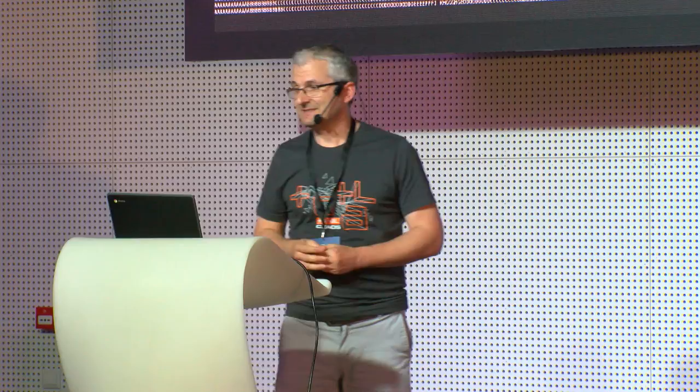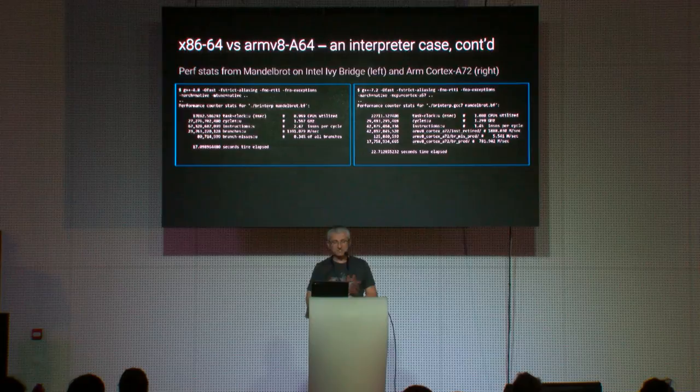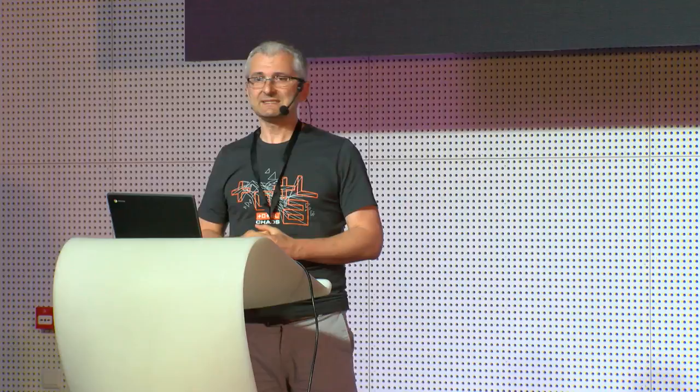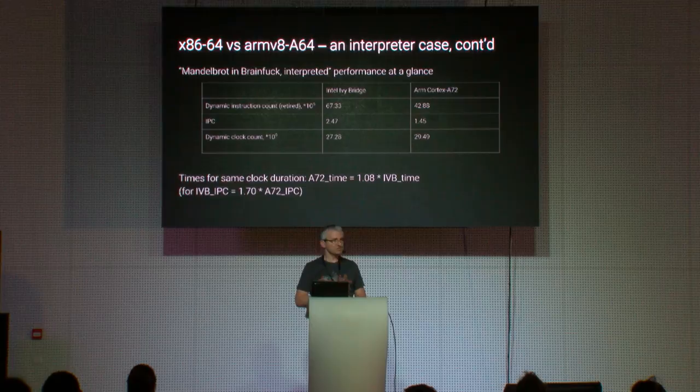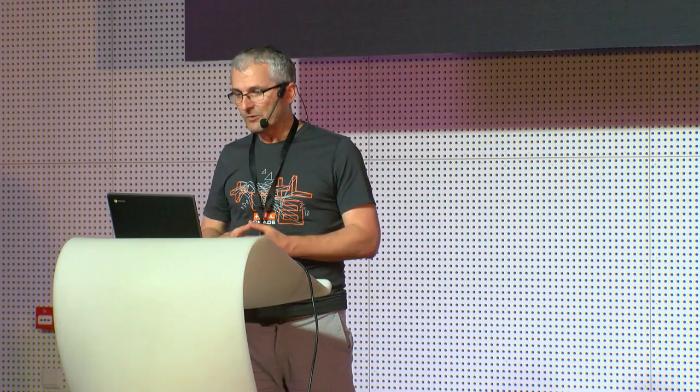The workload is a famous Mandelbrot plotter written in Brain Frack by Eric Bosman — 11 kilobytes of dense Brain Frack code producing beautiful ASCII art. Perf stats: Intel Ivy Bridge executed 67.33 billion dynamic instructions at 2.47 IPC, amounting to 27 billion clocks. ARM executed 42.9 billion dynamic instructions at 1.45 IPC, amounting to 29.5 billion clocks. At the same frequency, ARM loses by 8%, despite a 70% IPC disadvantage — a disadvantage comparable to the gap between an in-order and out-of-order CPU, or a single-issue and dual-issue CPU.